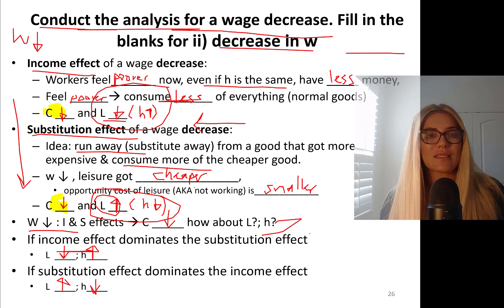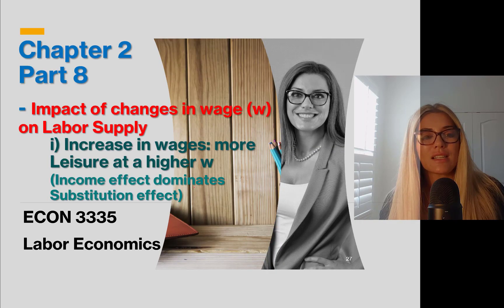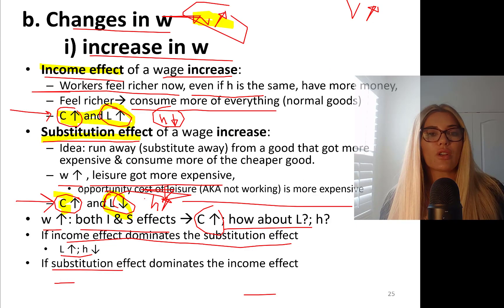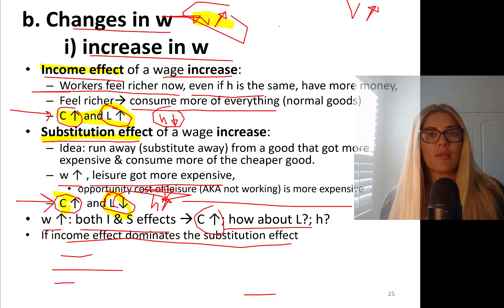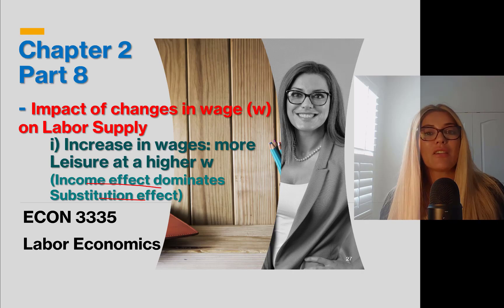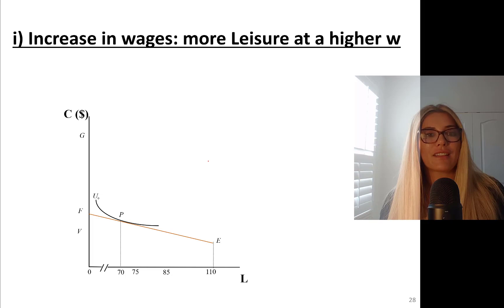It's great to have this analysis. Now we can work on this using graphs: increase in wages with more leisure at a higher wage rate — income effect dominating substitution effect. We're working on this case where wages go up and income effect dominates. I'll see you in the next part where we work on that graphically.